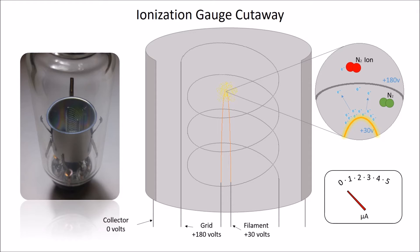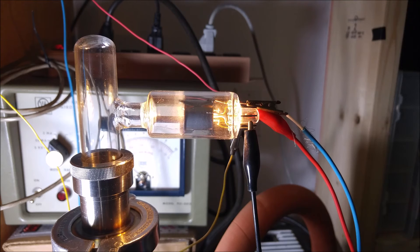This ion will then be attracted to the collector, where it will cause a small amount of current to flow. This current is directly proportional to pressure. Because of the ions present, the gauge will actually glow at low pressures.